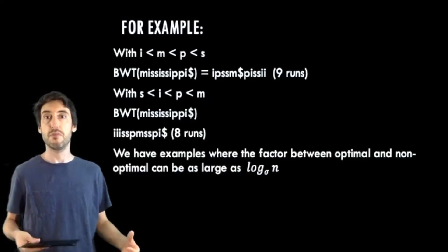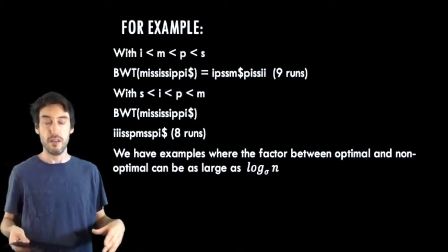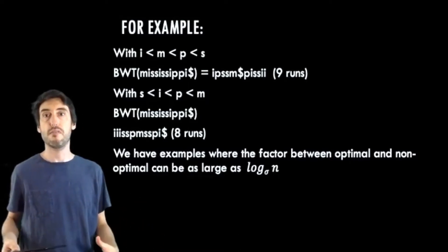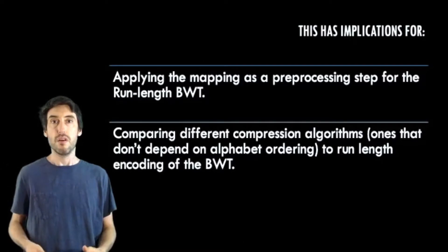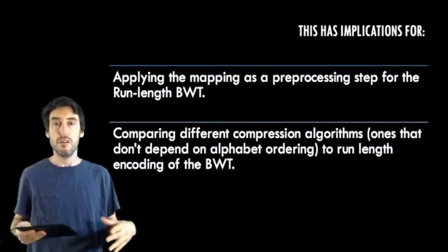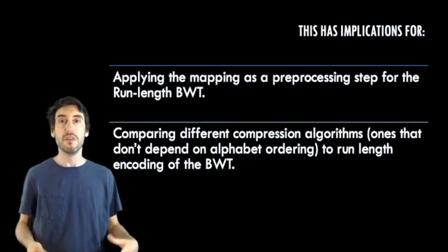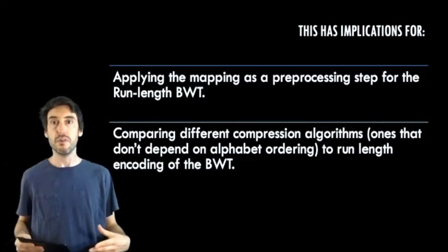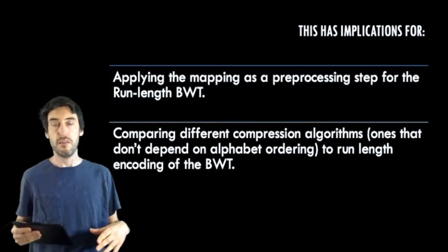So we have found examples where this difference can be as large as log base sigma n, and that's the difference between the optimal ordering and something suboptimal. So it can be a significant difference, which means that finding an optimal alphabet ordering is of some importance. So finding this actually has use in compression, so you could use it as a preprocessing step. So once the ordering is found, it could be used while performing the BWT to obtain a string even more amendable to run-length coding.